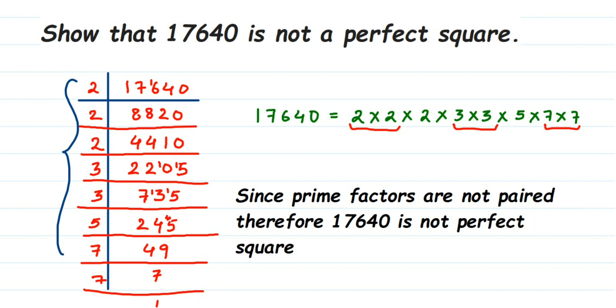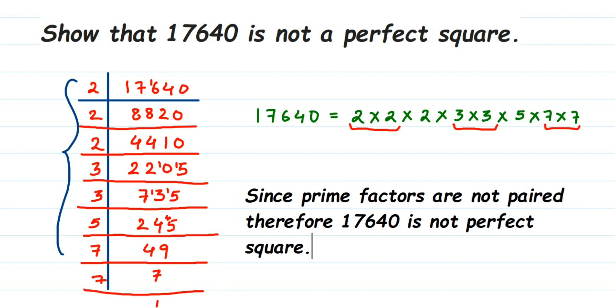So that's it. I hope this question is clear. You have to just prime factorize a number and see if the prime factors are in a pair or not. If they are, then the given number is a perfect square. If it is not, then they are not a perfect square. I hope this question is clear. In case you have other questions or doubts, you can drop a comment. I'll try to make a video on it. Thank you so much for watching.